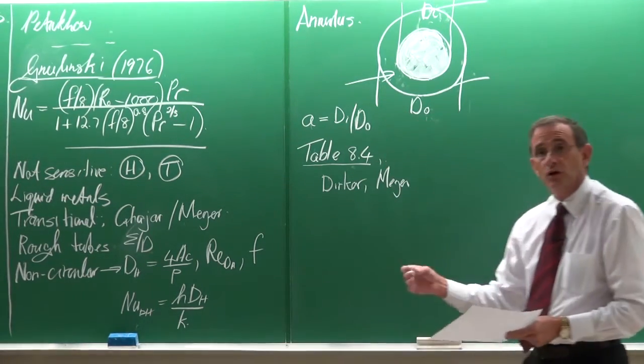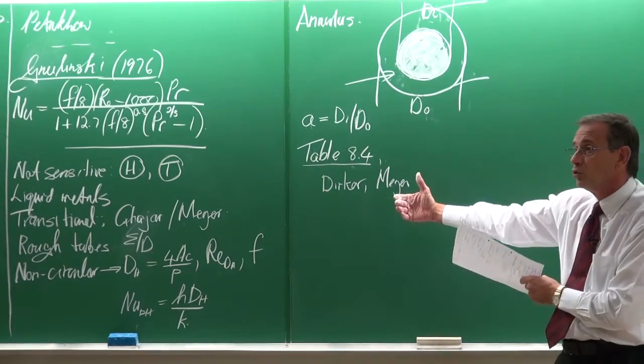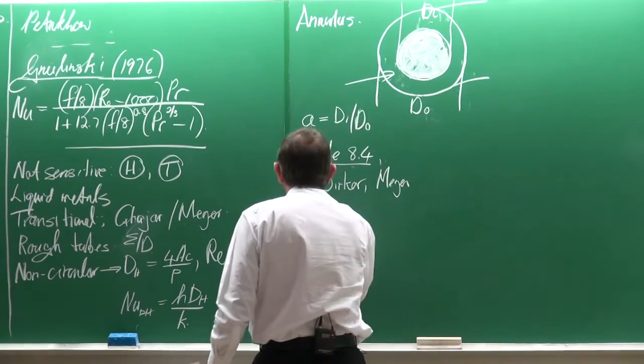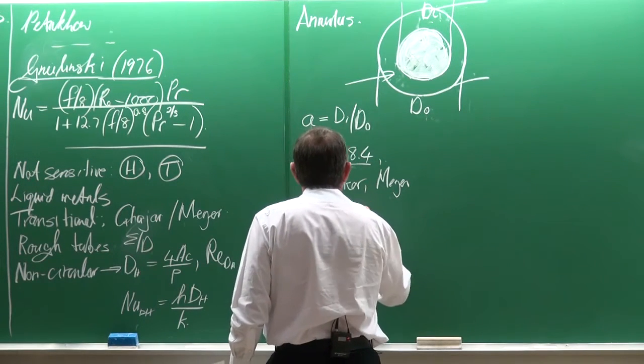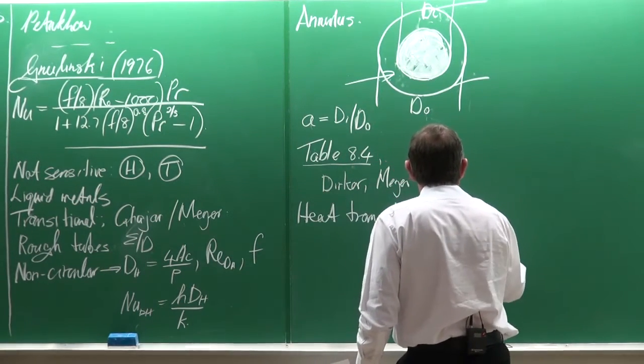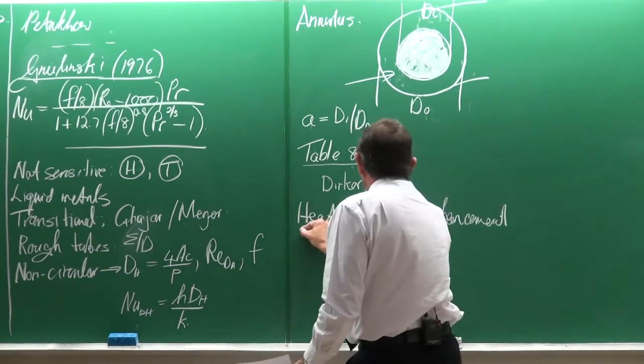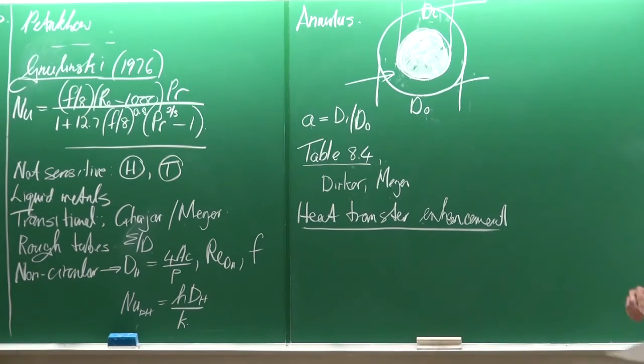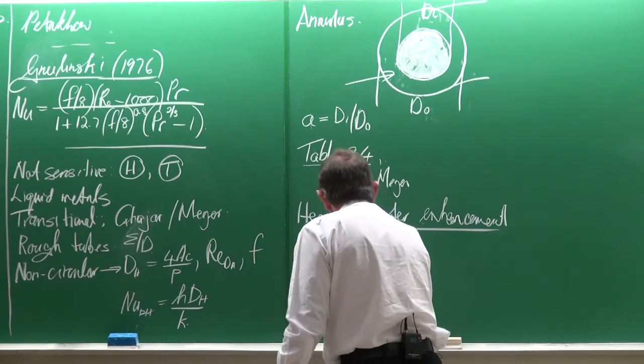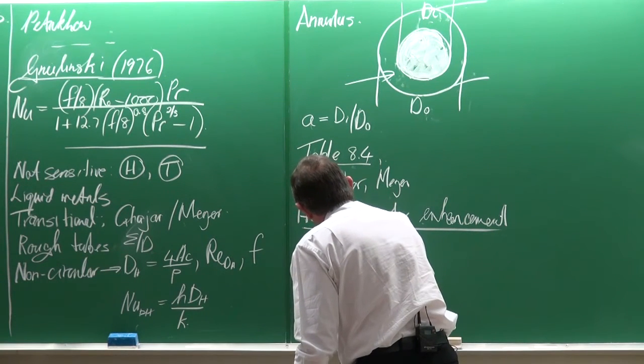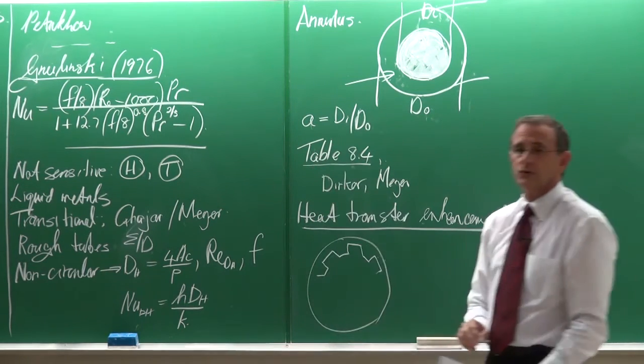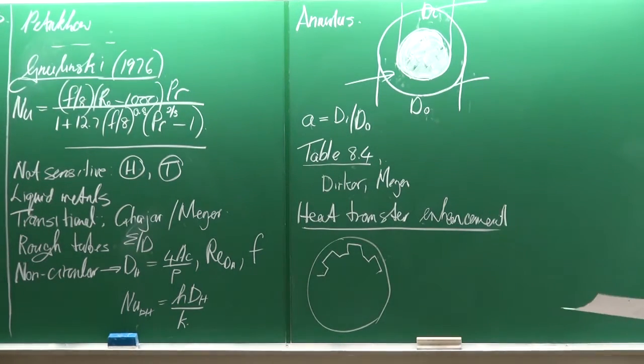Then, another body of work which is not in your textbook, again because it is just too much, is tubes where we have what we call heat transfer enhancement. And these are tubes where typically on the inside there are fins. My sketch is not so good but you get the idea.